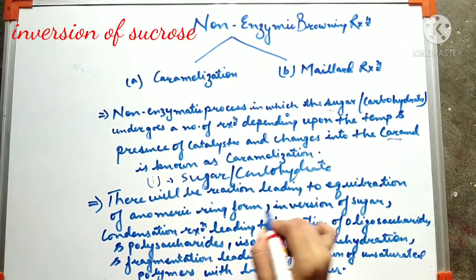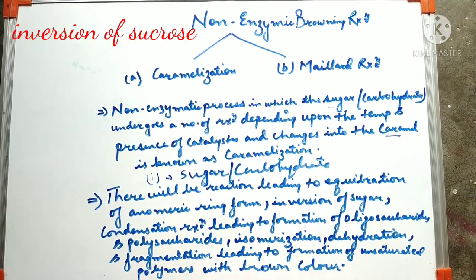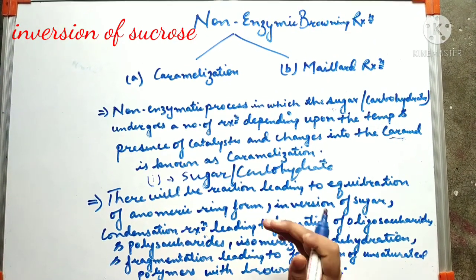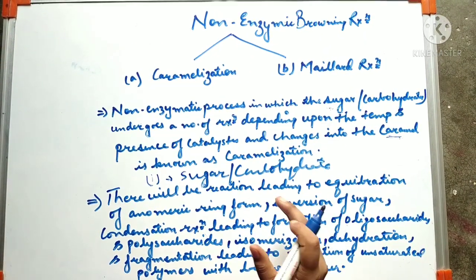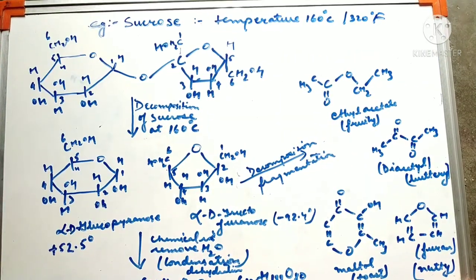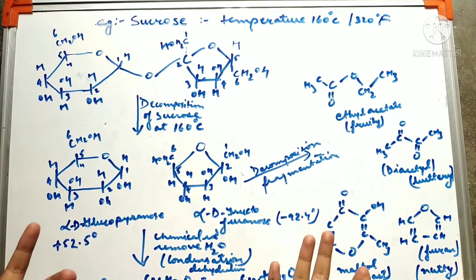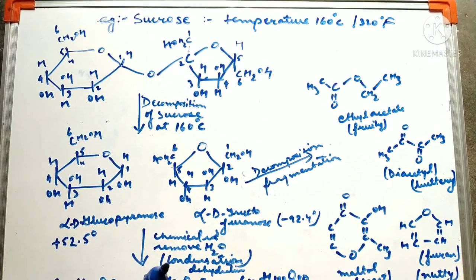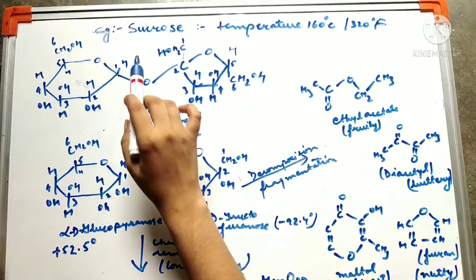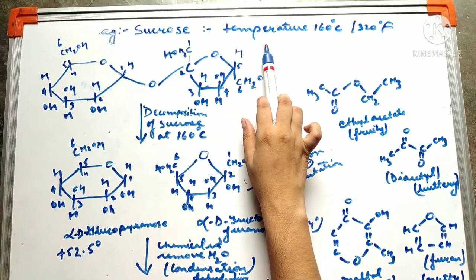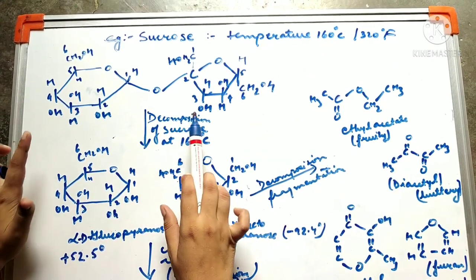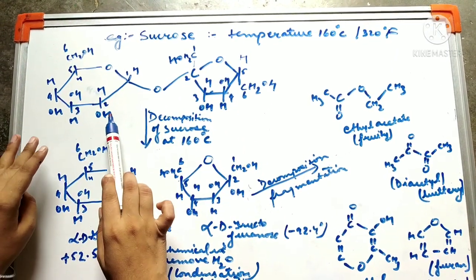Let us learn this whole process — how equilibration of the anomeric ring takes place, inversion of sugar, condensation, polymerization, and fragmentation — with a proper chemical equation and example. Basically, for flavoring purposes, we use sucrose in concentrated syrup form that is caramelized. Let us take the example of sucrose and deal with this whole process.